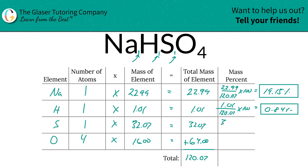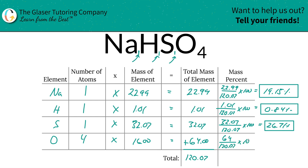For sulfur, take the total mass of the sulfur divided by 120.07. You've now found the total percent of sulfur. And for oxygen, you're going to take the 64 — consider the significant figures when you do your calculation, because nobody wants to lose points on their exam. Oxygen is 53.30 percent. And that's it for oxygen.